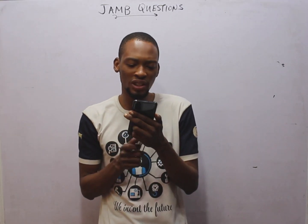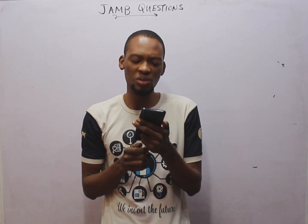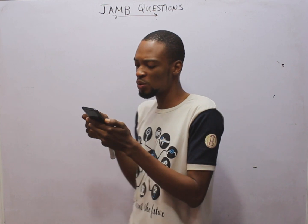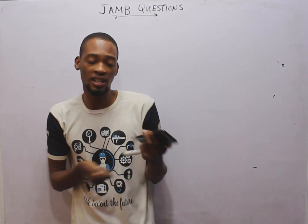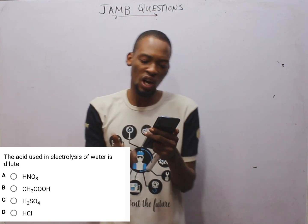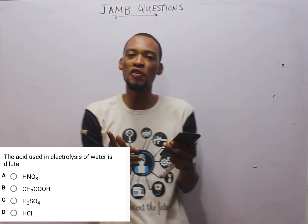The acid used in electrolysis of water is dilute H₂SO₄. Electrolysis of water is the decomposition of water into oxygen gas and hydrogen gas, and the electrolyte used is H₂SO₄, which further confirms that H₂SO₄ is an electrolyte.